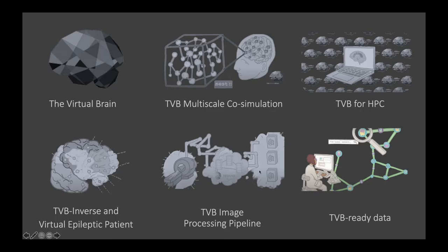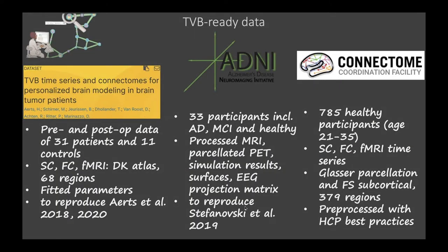What comes out of the TBB image processing pipeline is TBB-ready data. One dataset is already curated and available in the eBrain's knowledge graph. It contains pre- and post-operative data of tumor patients — 31 patients and 11 controls — with structural and functional connectomes and region average fMRI time series, with the Desikan-Killiany atlas.